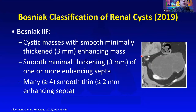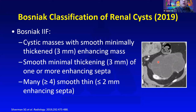For Bosniak 2F, the septations can be a little bit thickened, or there is minimal thickening of one or more enhancing septa, or many smooth thin septations. Something like this would fall into Bosniak 2F, in which you have more than four very thin septations.